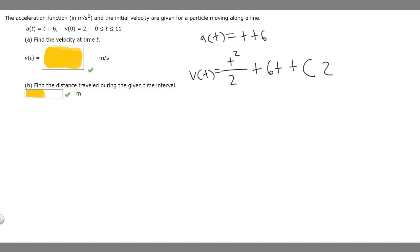Now we know c equals 2, so our velocity function is going to be equal to t squared over 2 plus 6t plus our c, which we just found out was 2. So v(t) is going to be t squared over 2 plus 6t plus 2.